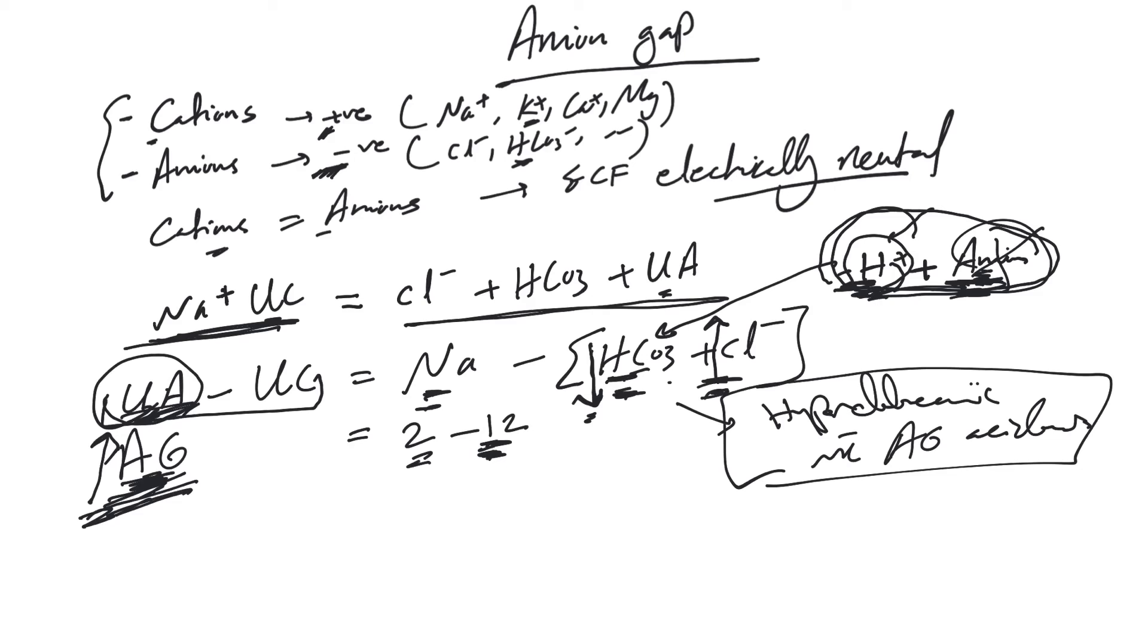Anion gap always indicates acidosis. Actually, anion gap equal to or more than 20 always indicates there is increased anion gap metabolic acidosis, regardless of pH, bicarb, regardless of anything. When you see this, there is for sure increased anion gap metabolic acidosis.